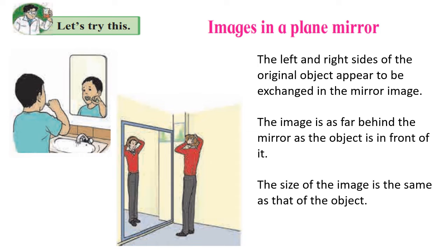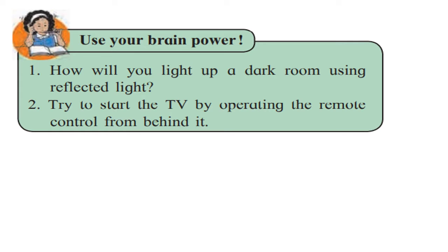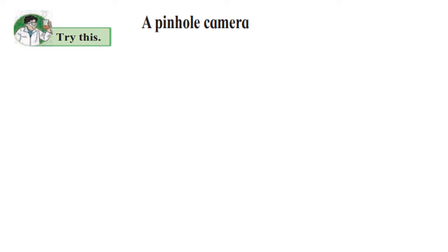Now let's go ahead. I asked you a question last time — on page number 99, use your brain power. I told you to start the TV by operating the remote control from behind it. What happens is even if we operate the remote from behind the TV, the TV still starts. Because the rays from the remote are reflected from the opposite wall and then come back to the television. So this also explains reflection of light.